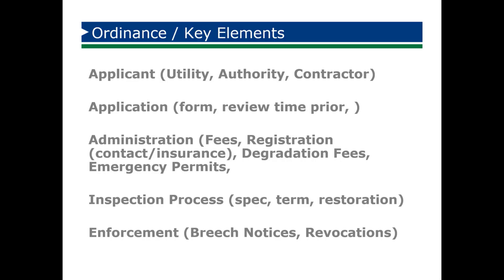The next thing your ordinance should talk about is the inspection process itself. It should reference specifications. It should reference how long the permit is good for so that the inspector knows they're identified in that inspection process, as well as restoration — what that cut is going to look like in its finished state. Lastly, the last component to think about is the enforcement of this. The permit gets them in the door and lets you know work is going to take place. Enforcement gives you the ability to go out and inspect that work, follow up with the person who did it, and put them on notice if it's not done correctly or revoke permits.